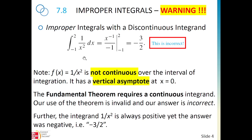It is extremely important to avoid simply applying the Fundamental Theorem of Calculus, because it doesn't apply in these situations. For instance, 1/x² is positive, but if we integrate it between -1 and 2 and ignore the problem at 0, we get a negative answer — clearly incorrect. The Fundamental Theorem requires a continuous integrand, and 1/x² is not continuous over [-1, 2] because of the vertical asymptote at 0.